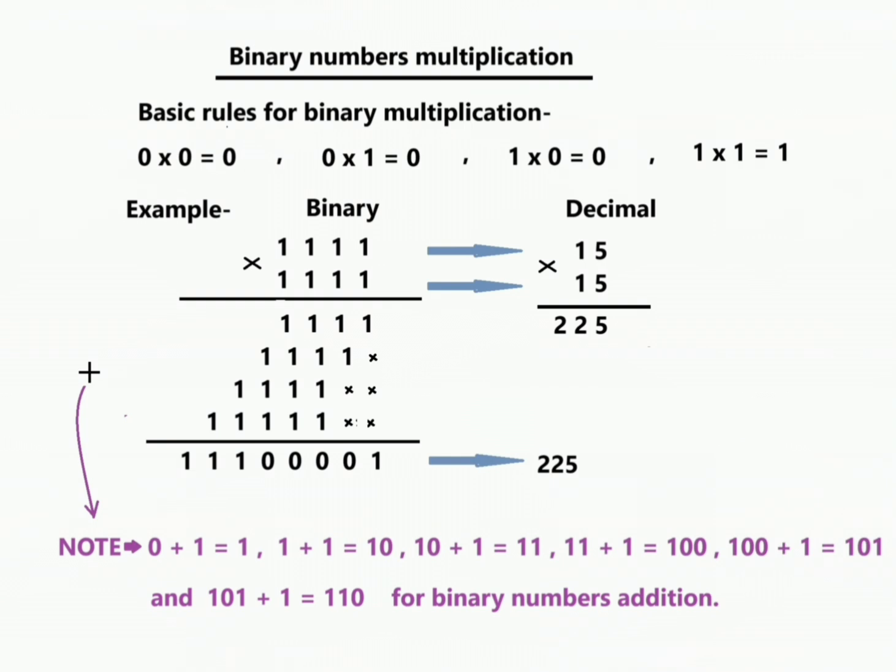Some rules for binary addition are also written, which we follow during multiplication. Our answer is 11100001, which equals in decimal: 15 multiplied by 15 equals 225.